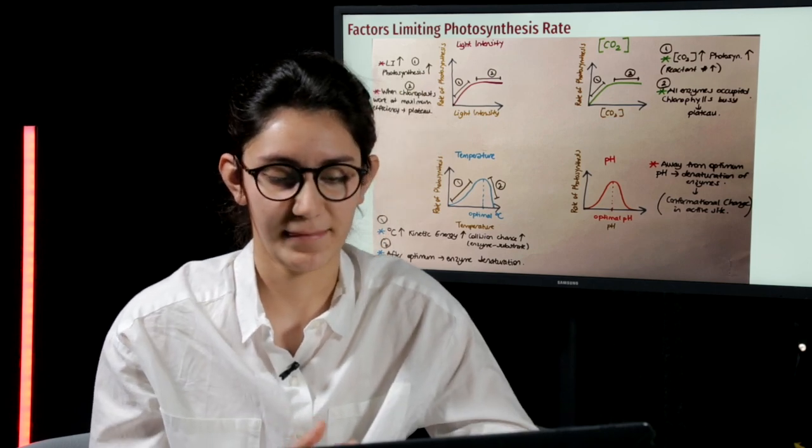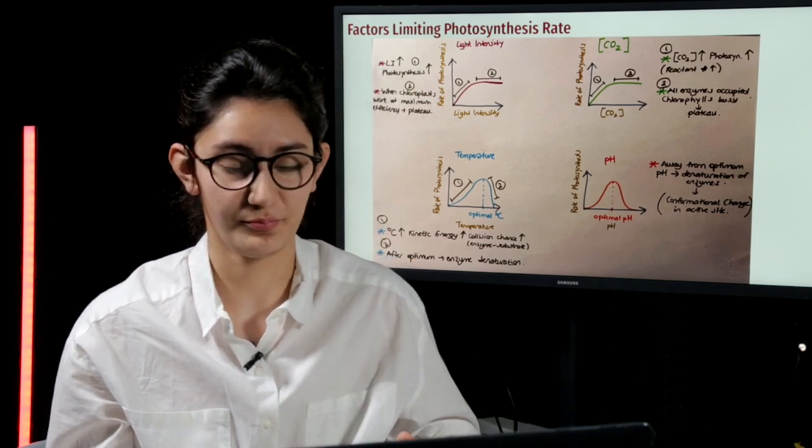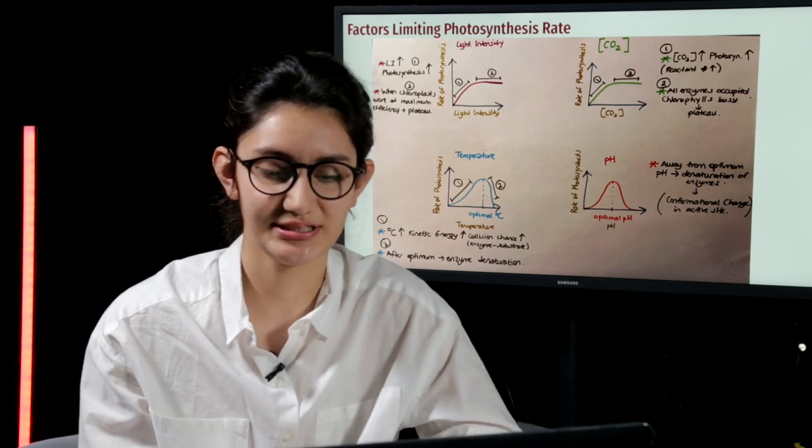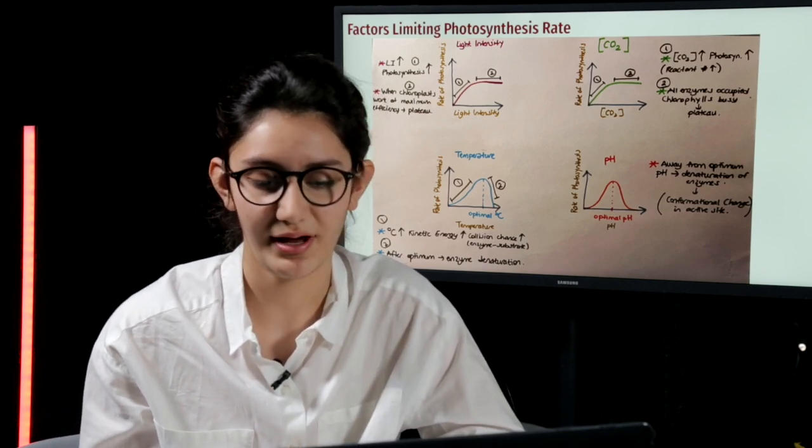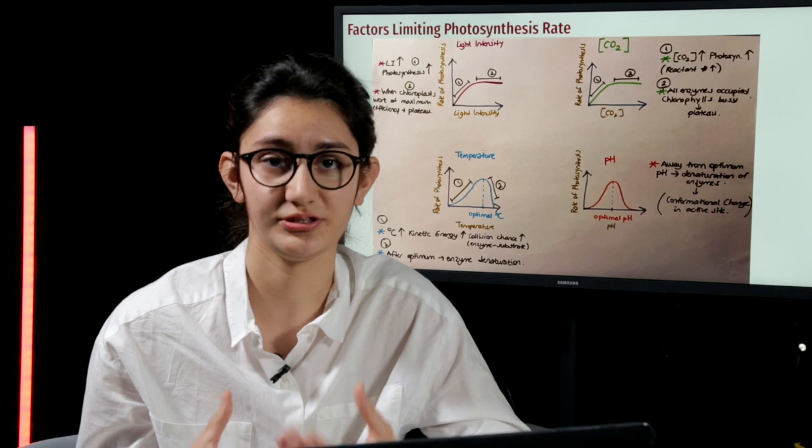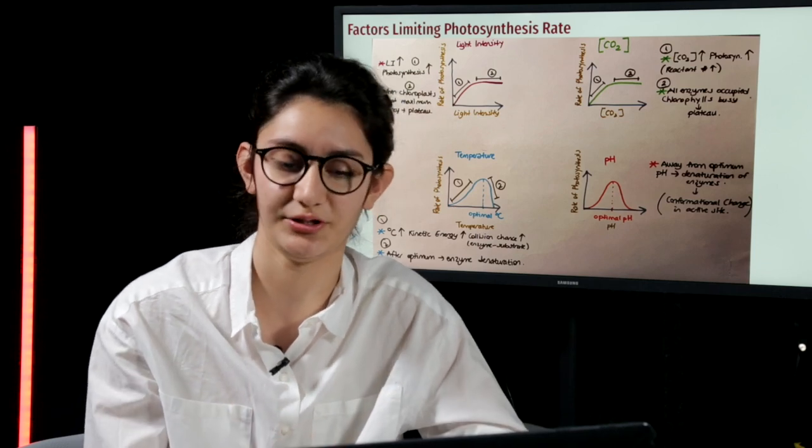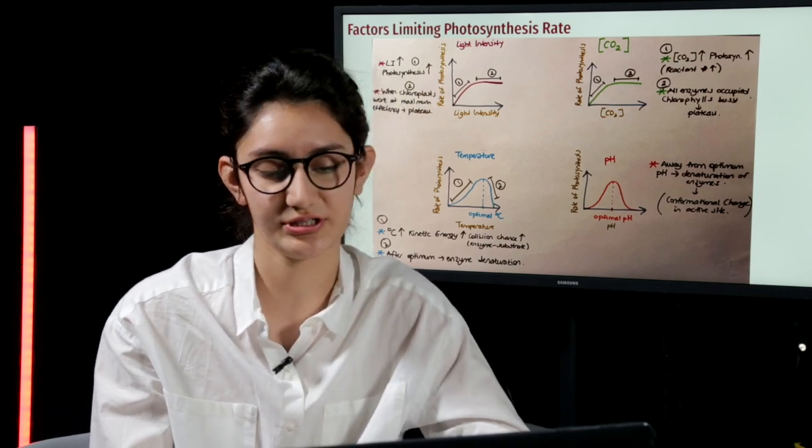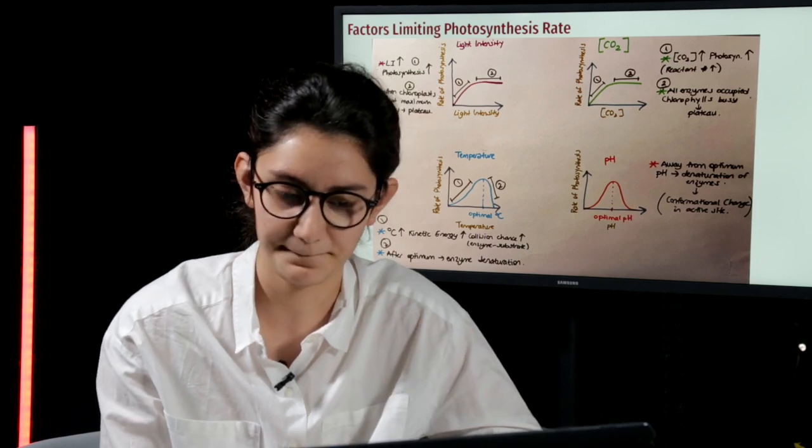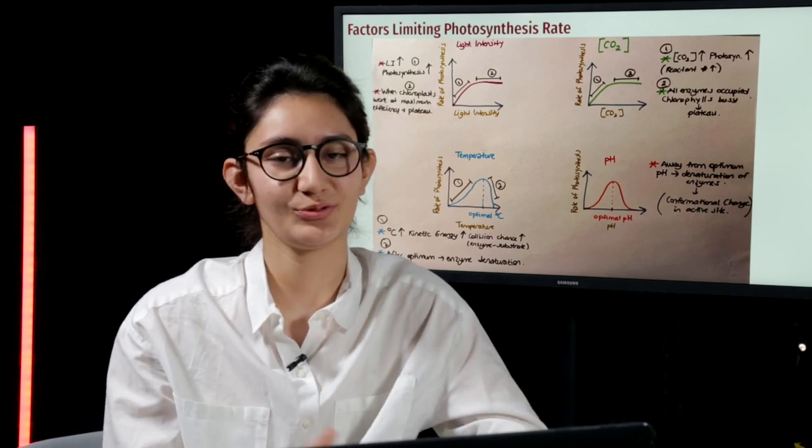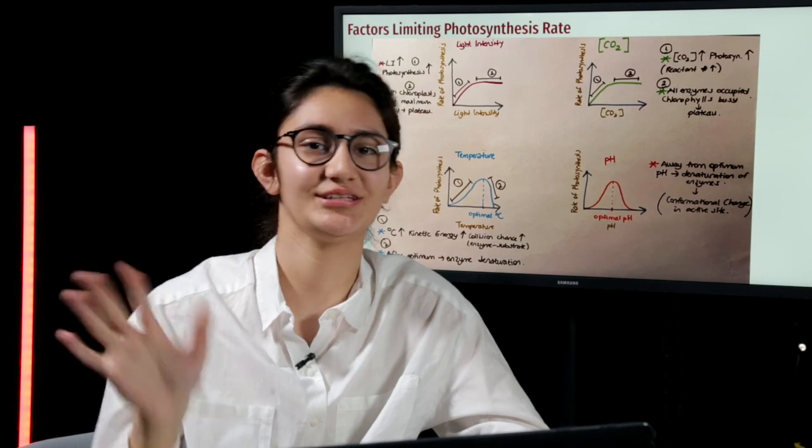Lastly, as we go far away from optimal pH, since the enzymes will denature, and therefore some conformational changes will occur in the active site of the enzymes, the rate of photosynthesis will decrease abruptly. So, this was it for today. See you in the next video.